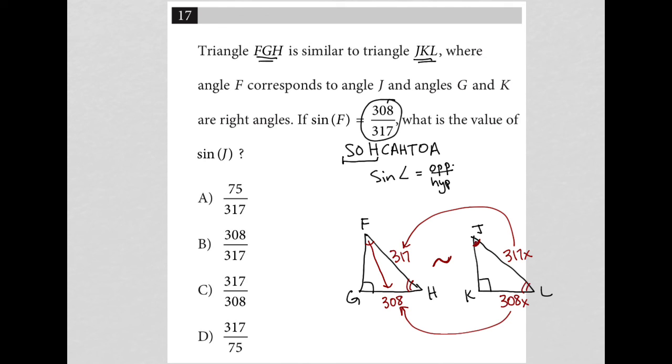But the thing is, if I take the sine of J here and I say that's opposite 308X divided by hypotenuse 317X. The X just crosses out so they didn't even really matter once you take the ratio. So 308 over 317 is the correct answer and therefore we are at choice B.